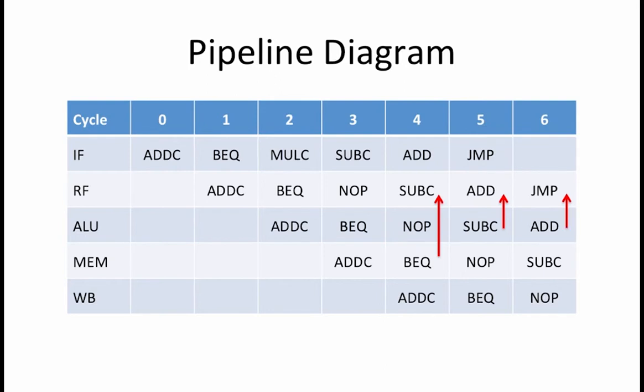Finally, the jump reads the value of R3 via the bypass path from the ADDC instruction which is in the ALU stage in cycle 6.